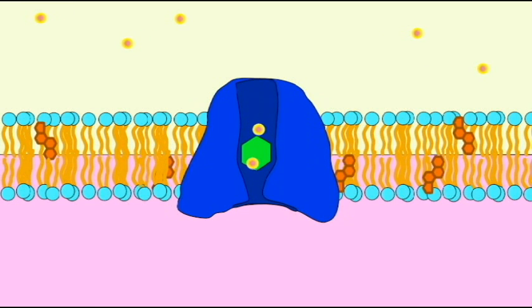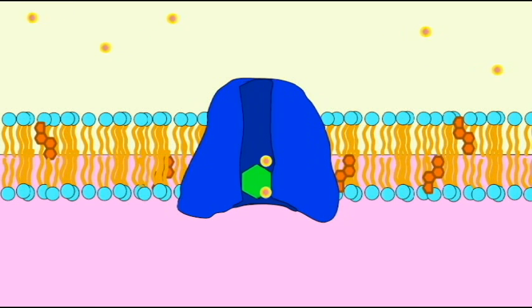Since there is a sodium gradient, the cell takes advantage of this gradient to transport a second substance, glucose.